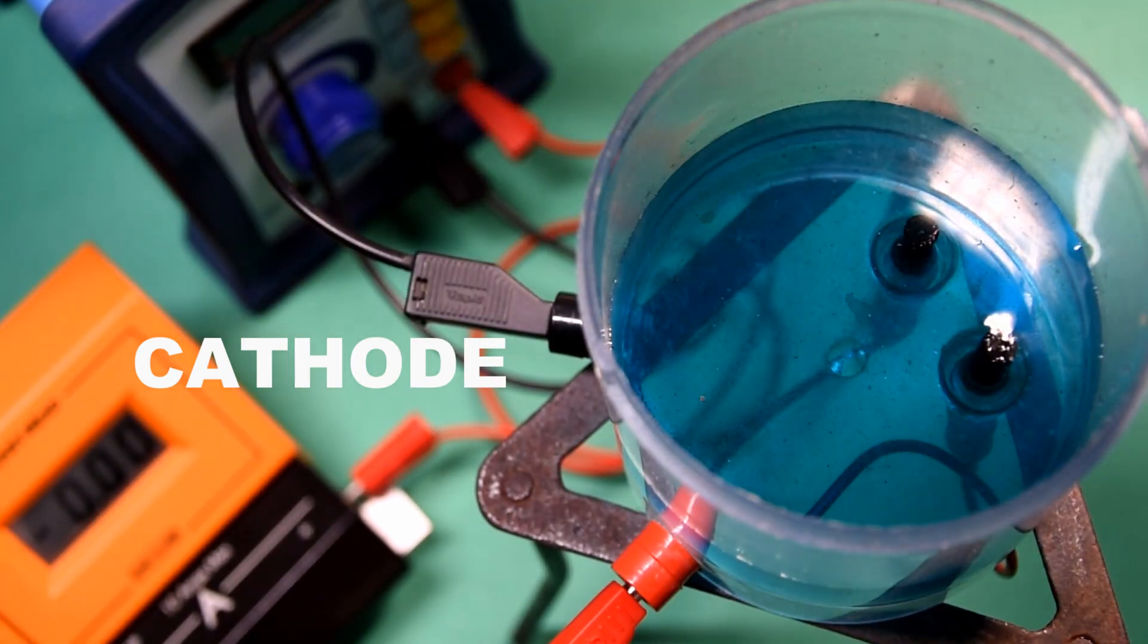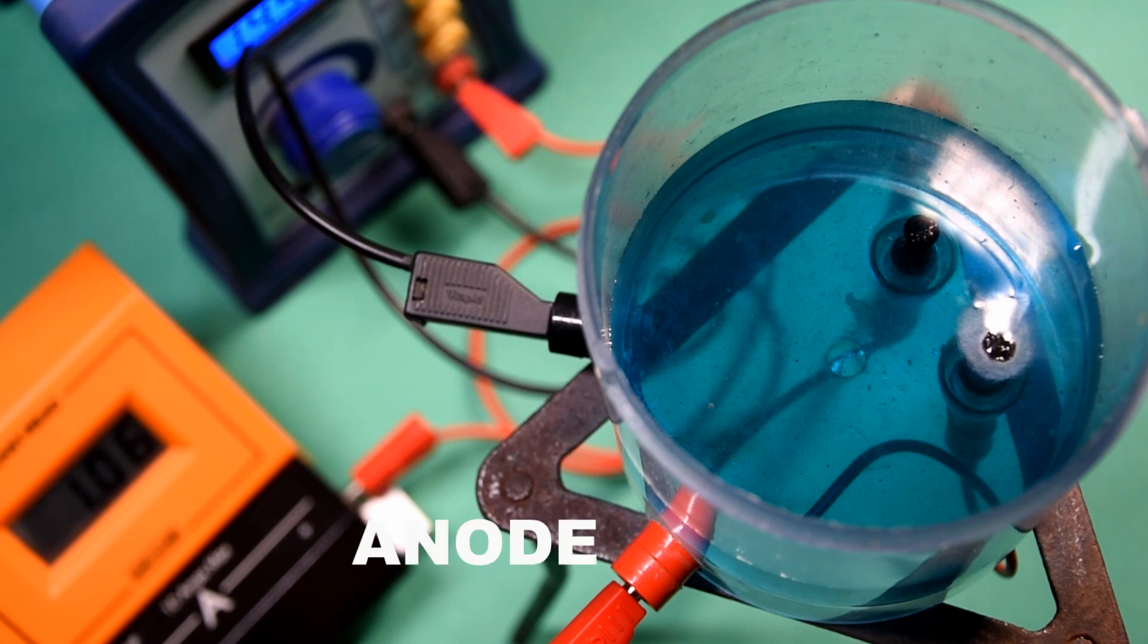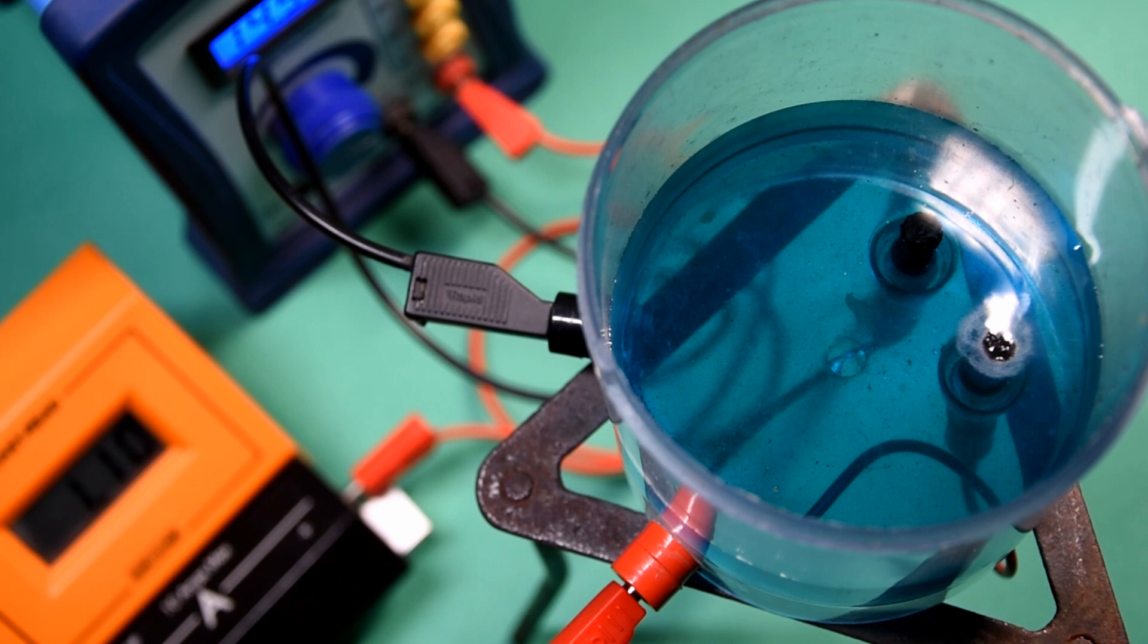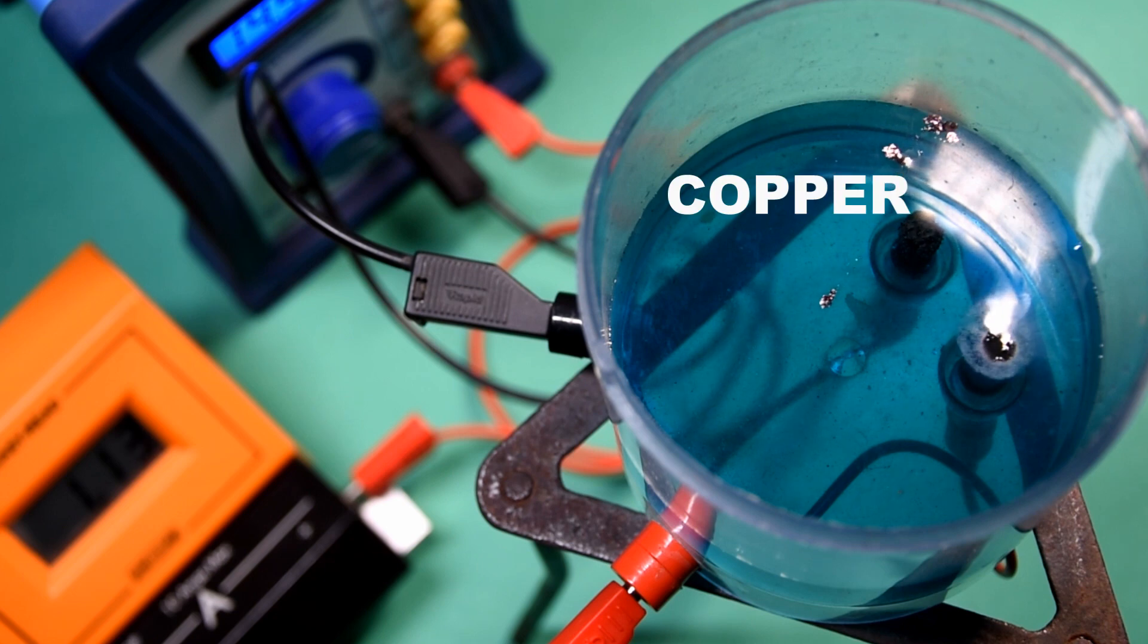Copper sulphate is poured into a beaker with two inert carbon electrodes and a current passed through. It's possible to see the oxygen bubbling at the positive anode. And after a while, the copper becomes apparent at the negative cathode.